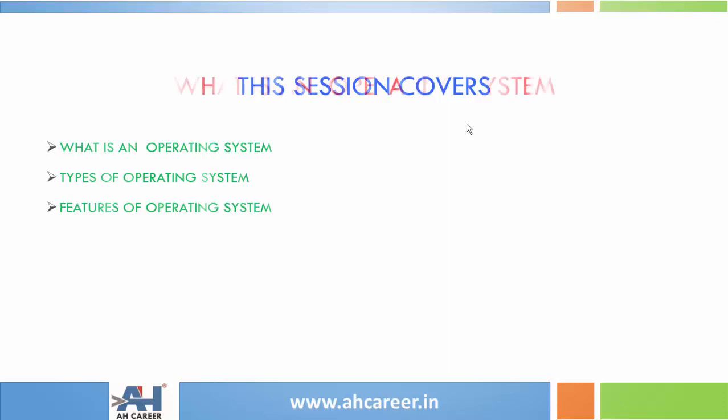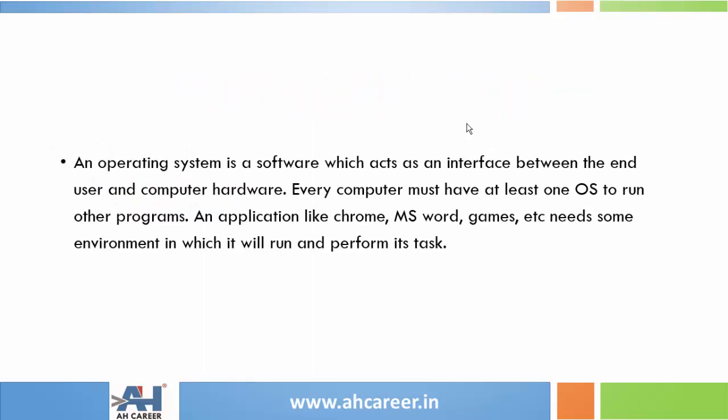What is an operating system? An operating system is software which acts as an interface between the end user and computer hardware. For example, we can see applications like Chrome, Word, Excel, Games, and PowerPoint. These run in some environment and perform our tasks. Most importantly, every computer must have at least one operating system to run many other programs.